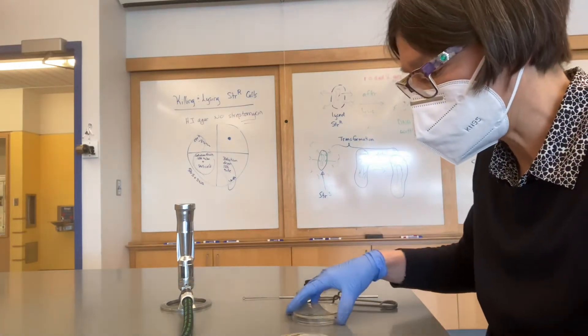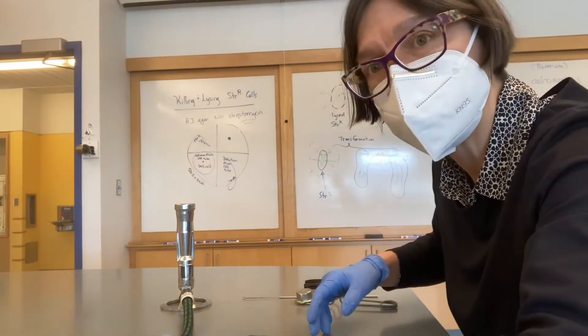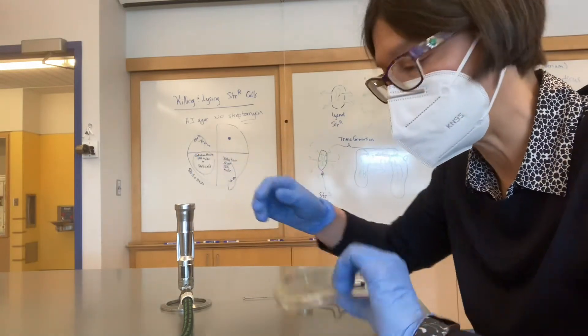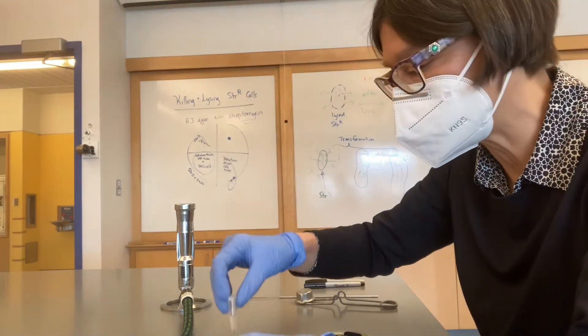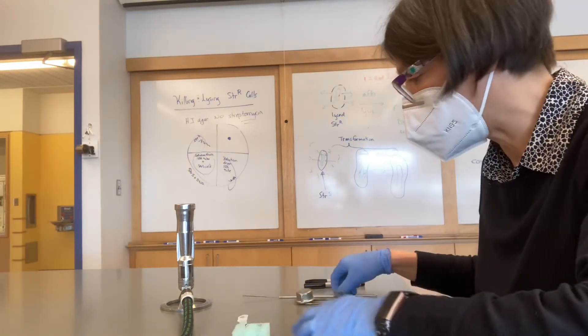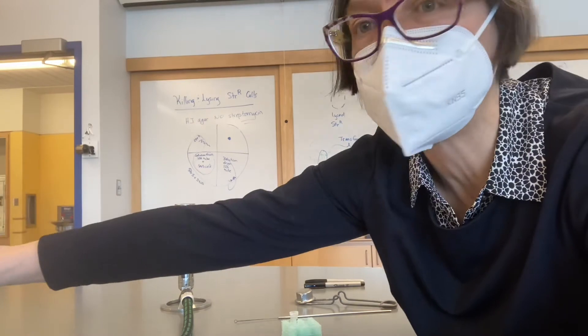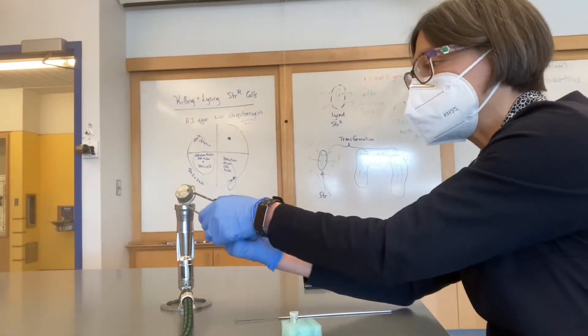So I'm going to start the lab by taking the culture of STRR, the AAD2 containing strain, taking the SDS tube, getting those in front of me, and I'm going to turn the Bunsen burner on. I'm turning the gas on, and I'm striking the burner.